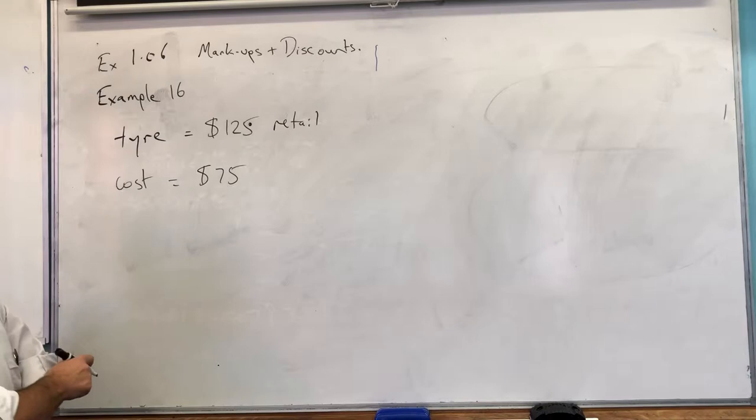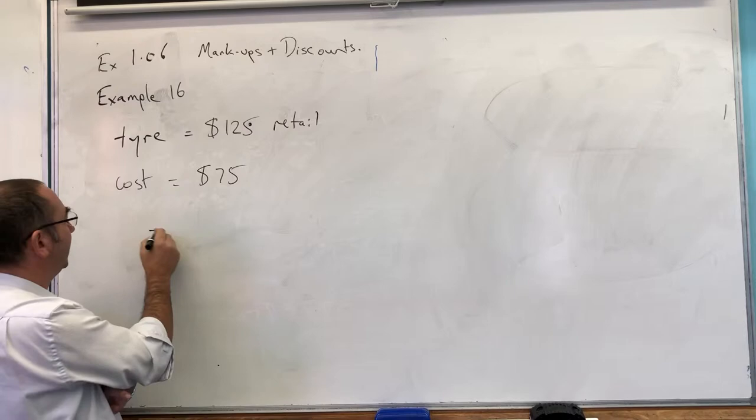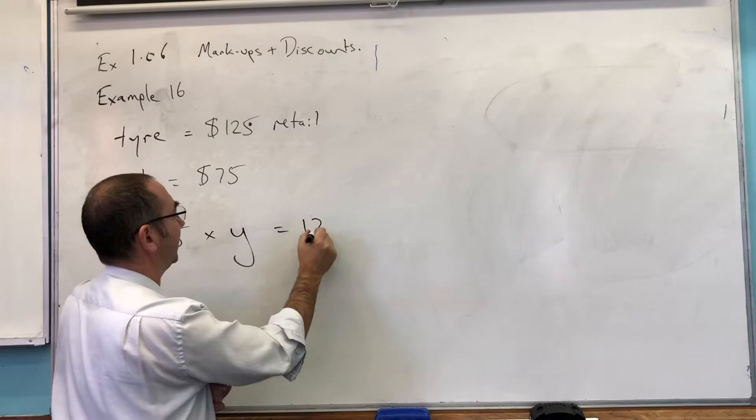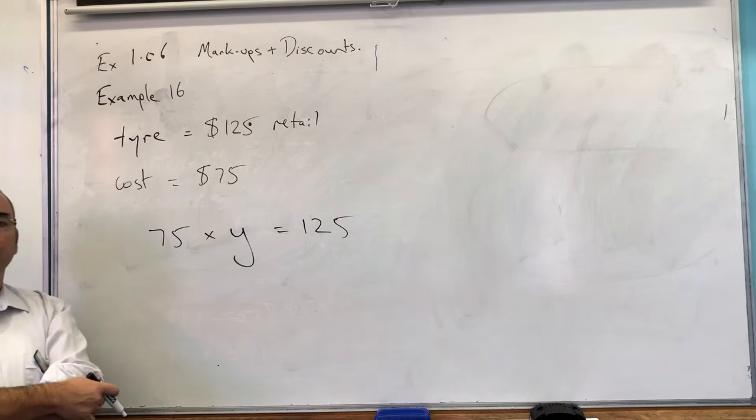How much did it increase in terms of percentages? So the way I would do this is I know that the cost price times some unknown percentage is going to be equal to the retail price. And it's the unknown percentage that I want to try and find. So this is again back to your fairly basic algebra.